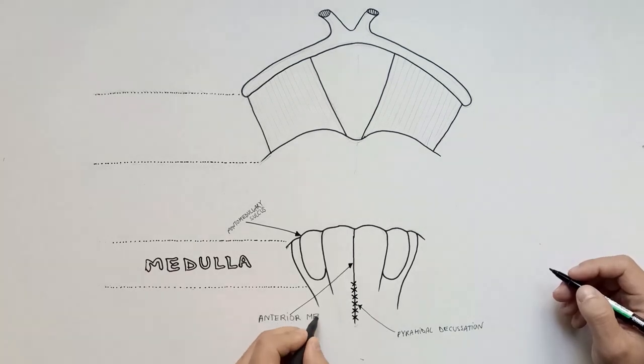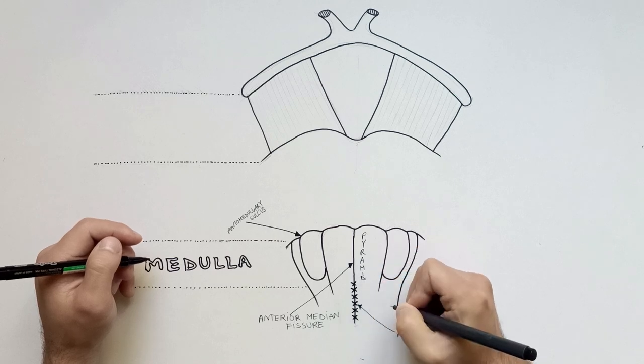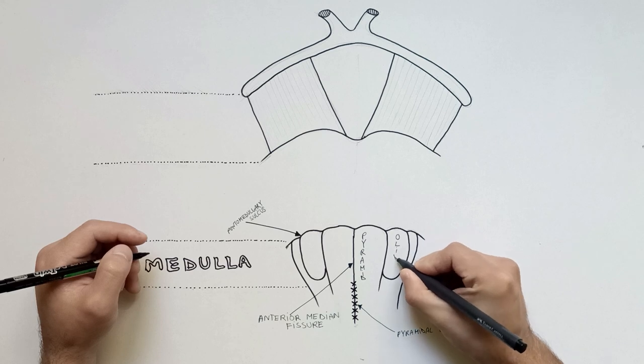On the midline we have the anterior median fissure. On each side of this fissure is a prominence called pyramid. Lateral to the pyramid is a prominent oval structure called olive.